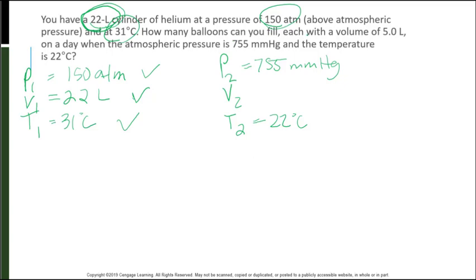How many balloons can you fill if each balloon has a volume of 5 liters? Well, I need to figure out what total volume I would get before I figure that out. On a day when the atmospheric pressure is 755 millimeters of mercury. So I'm given a P2. And the temperature is 22 degrees Celsius.